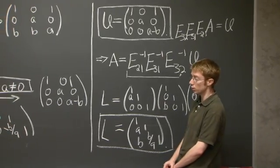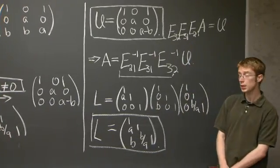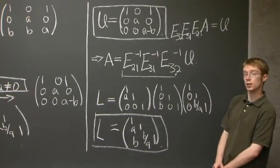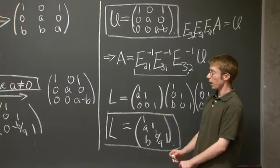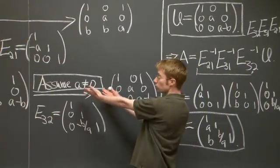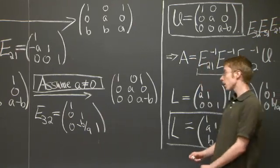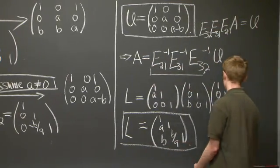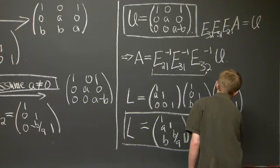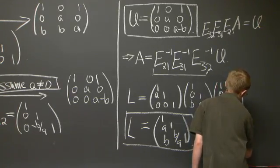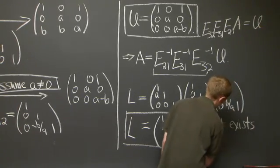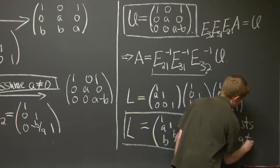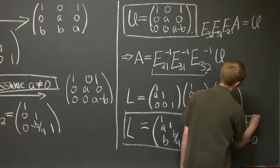The second part asks us for which real numbers a and b does this decomposition exist? Now, let's go back and remember that at one point we had to assume that a was non-zero. That was the only assumption we had to make to get this decomposition. So it exists when a is non-zero. And that's the answer to the second part.